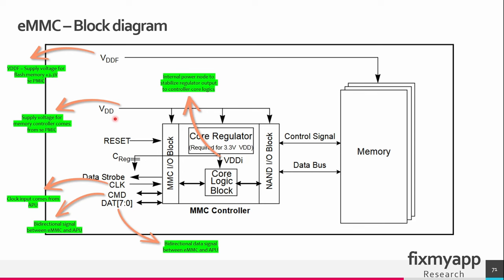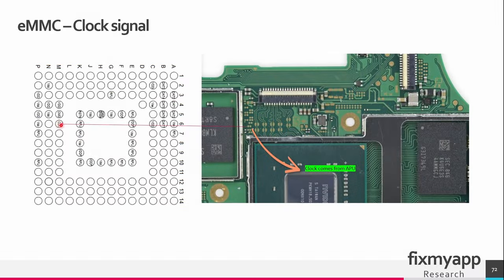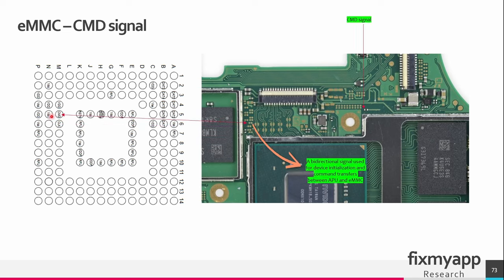VDD is the supply voltage for the memory controller and also comes from the primary power management IC. The reset signal comes from the APU, as does the data strobe, which also goes to the APU. On this pad the clock signal is received from the APU and can be measured here. This command pad is a bi-directional signal used for device initialization and command transfers between the APU and the eMMC, and this signal can be measured on this pad.